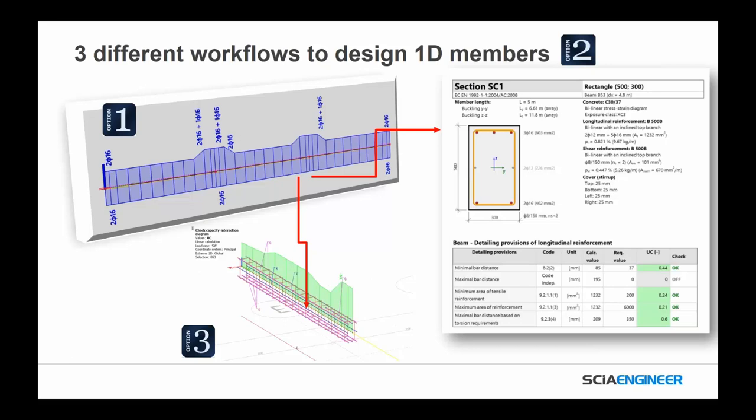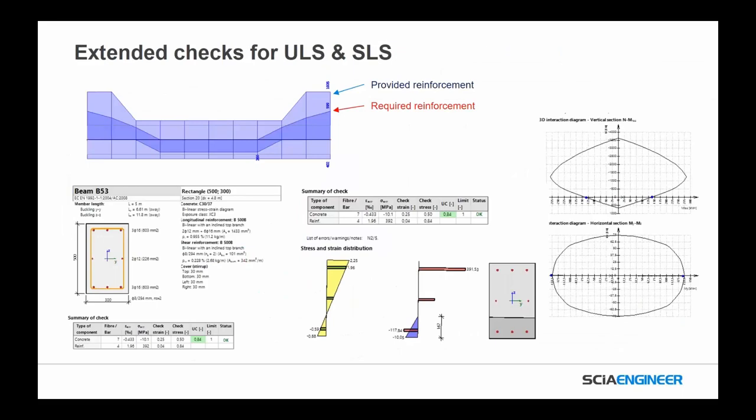From the basic information in option 1, you can go one of two directions based on the workflow you're looking for. We've extended the check for ultimate limit state and serviceability limit states for concrete 1D members. You can see what's required and what's provided — a graph throughout every member to give you a better idea of how the member is performing alongside required reinforcements. More detail and better output was really what the majority of users worldwide were looking for — really trying to eliminate this idea of black-box software.